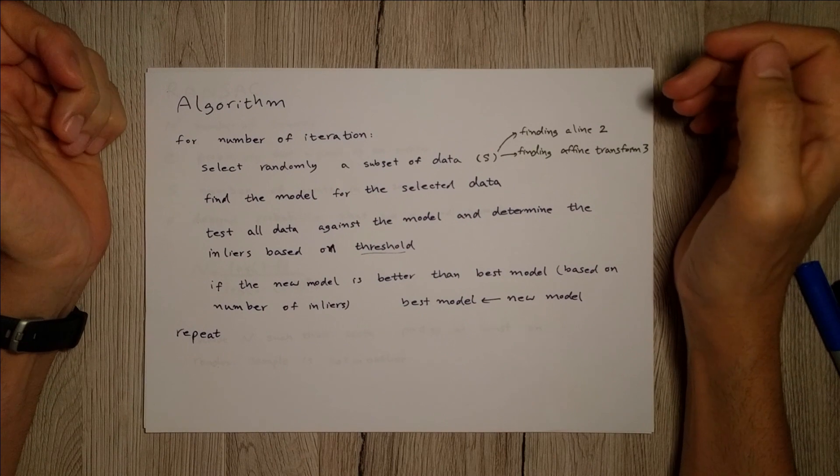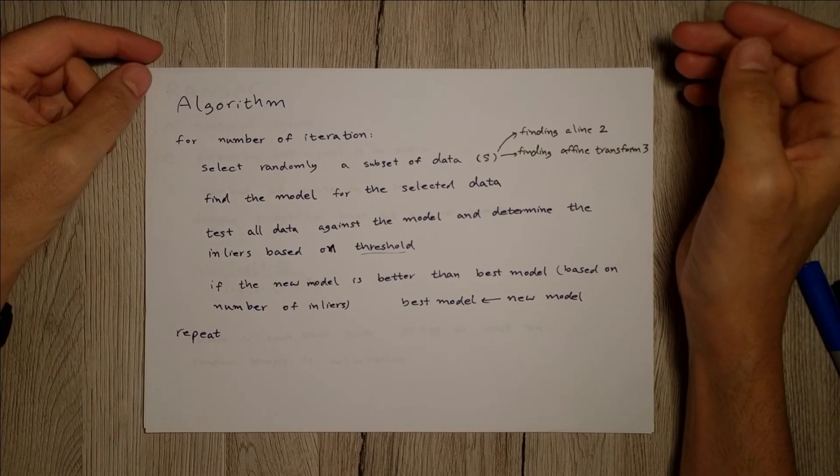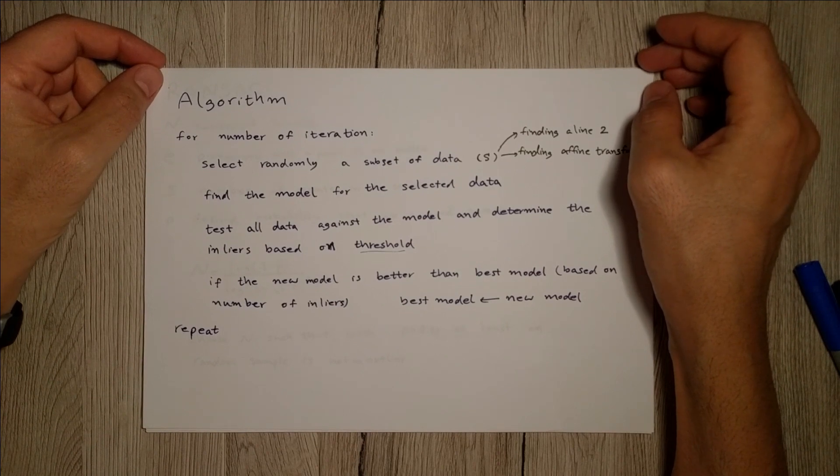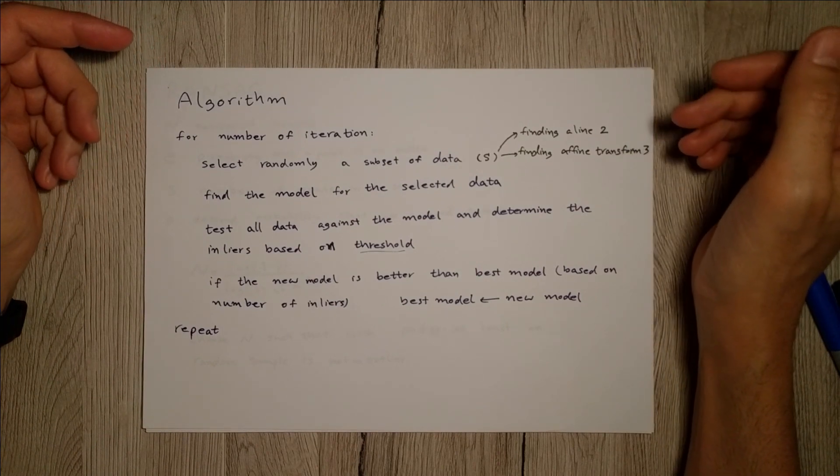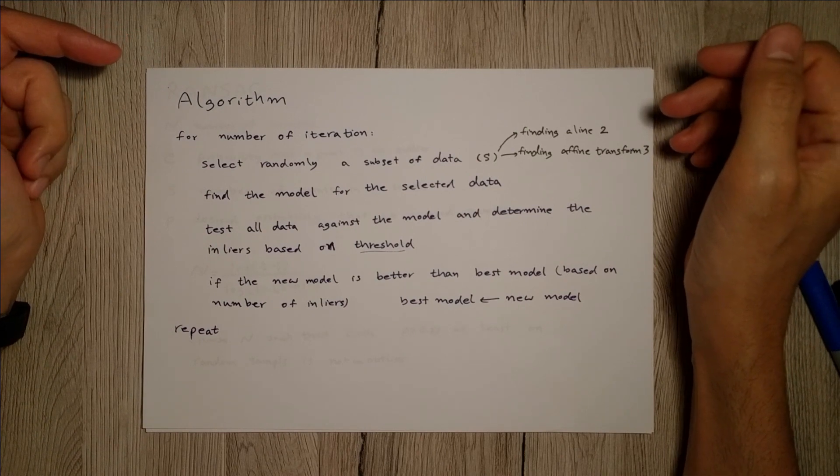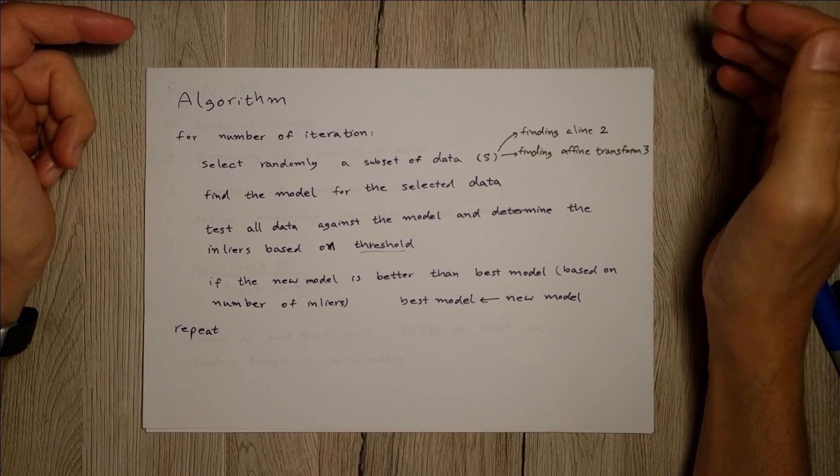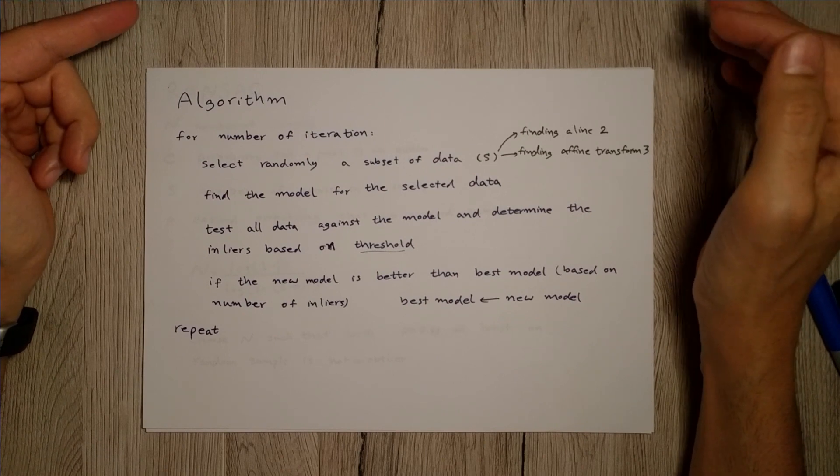Hi, in this tutorial I'm going to talk about the RANSAC algorithm. In the first part I will go through the algorithm, and in the second part I will show you how to choose enough samples such that with a good probability you have at least one inlier in your data.